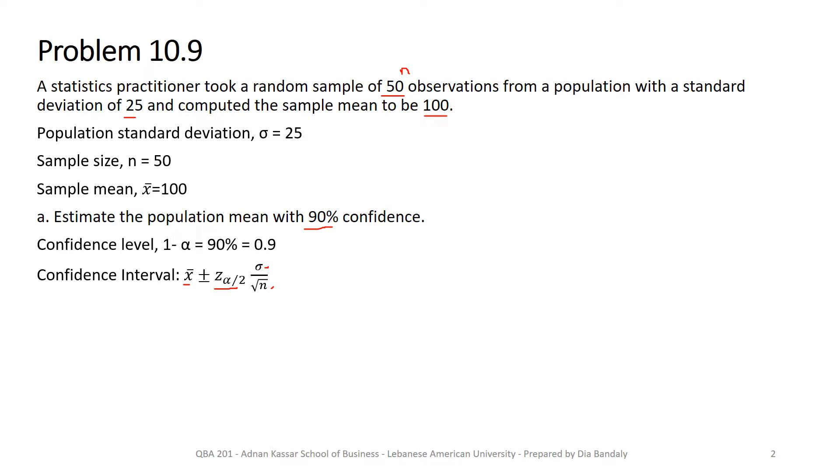So we know already 1 minus alpha equals 90%, so we can get alpha to be 0.1. And consequently, alpha over 2 to be 0.05.